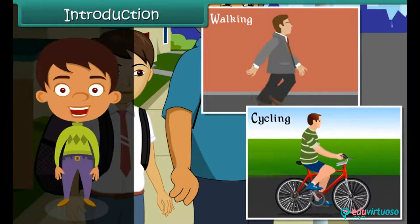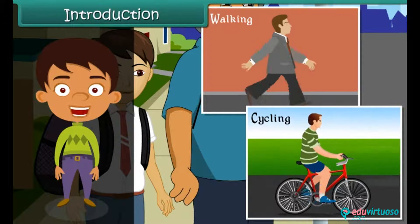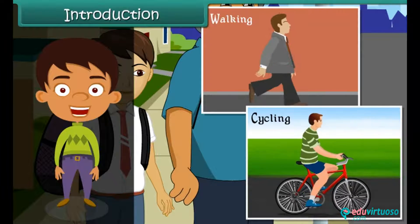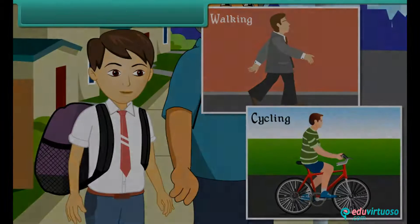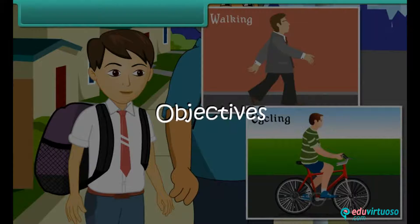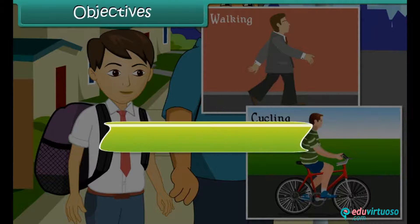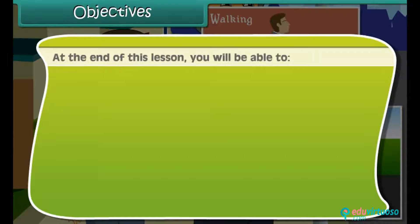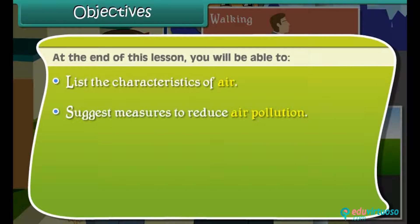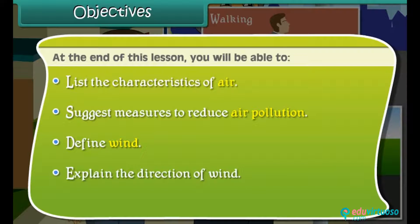In this lesson you will learn about air and its pollution. At the end of this lesson you will be able to: list the characteristics of air, suggest measures to reduce air pollution, define wind, and explain the direction of wind.